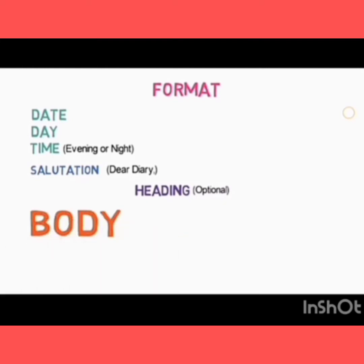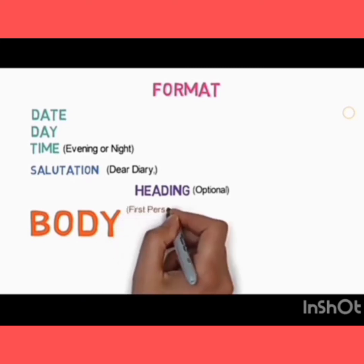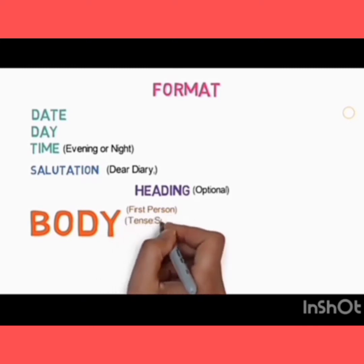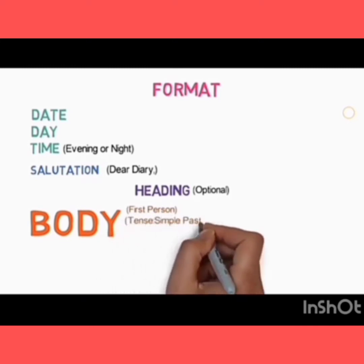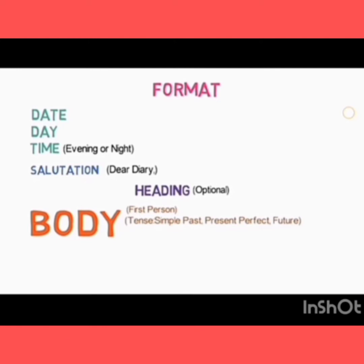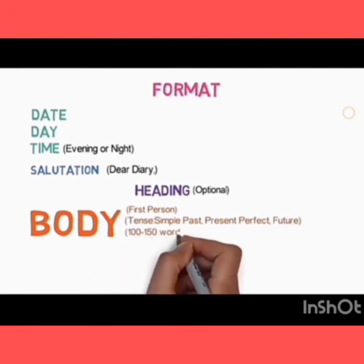Then you write a salutation to your diary. After that, you put a heading — the heading is optional, whatever you want to write. Then you give the body: whatever you want to write about that particular event or something that happened. It should all be written in first person.